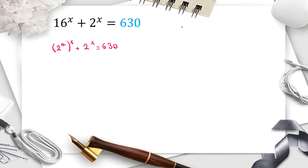The next thing we want to check is a to the m to the n. You can switch m and n, and it will be a to the n to the m. So by applying this rule, 2 to the 4 to the x, I can write it as 2 to the x to the 4 plus 2 to the x equal to 630.